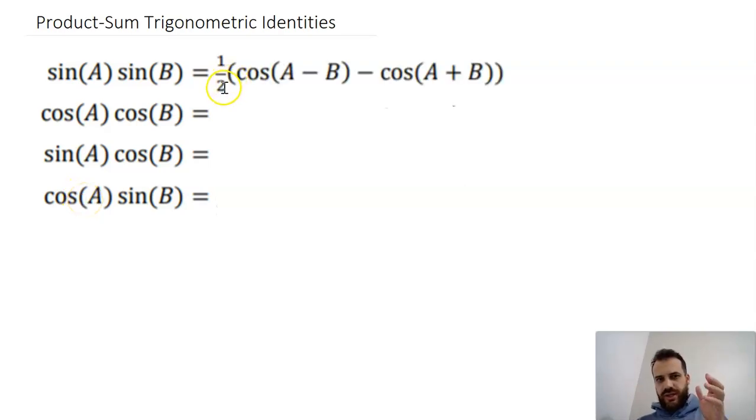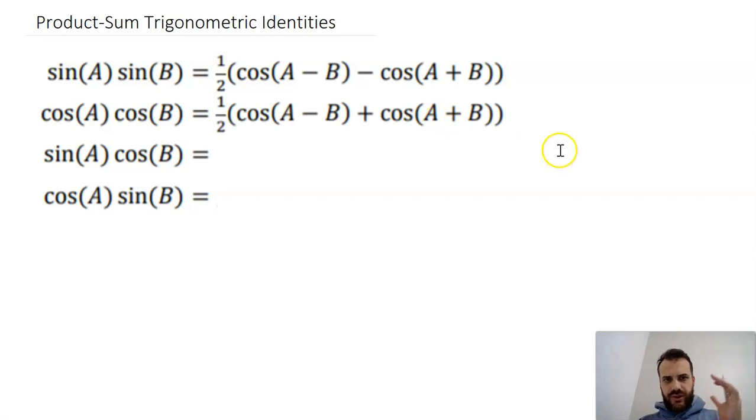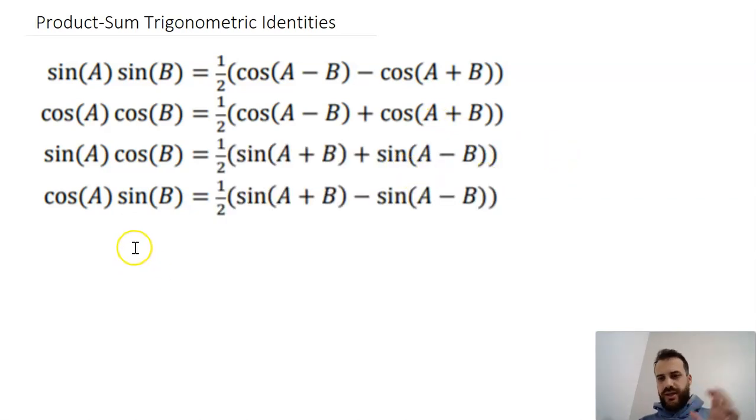So here's our first identity: half cos(A - B) minus cos(A + B). You're not going to have to memorize these, obviously. Here's another one looking very similar, plus instead of minus. And another one, and another one. And there are our four product-sum trig identities.